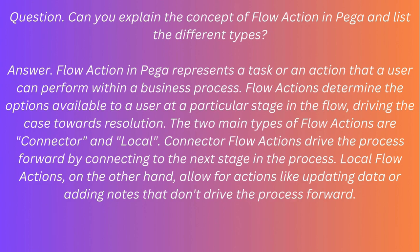Question: Can you explain the concept of flow action in PEGA and list the different types? Answer: Flow action in PEGA represents a task or an action that a user can perform within a business process. Flow actions determine the options available to a user at a particular stage in the flow, driving the case towards resolution. The two main types of flow actions are connector and local. Connector flow actions drive the process forward by connecting to the next stage. Local flow actions allow for actions like updating data or adding notes that don't drive the process forward.